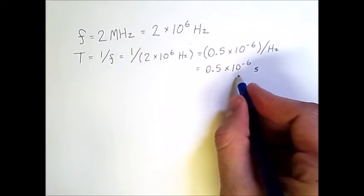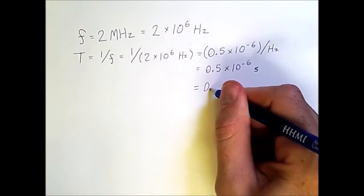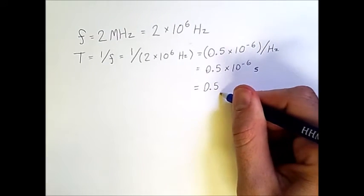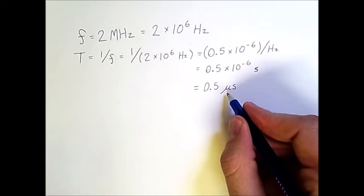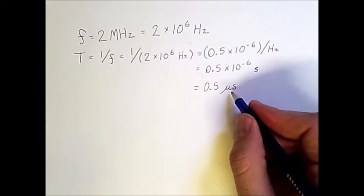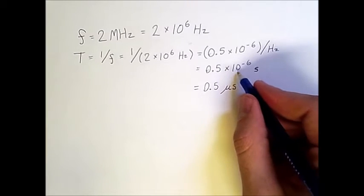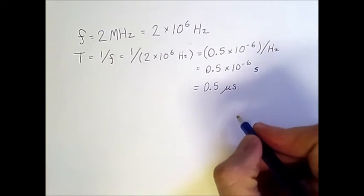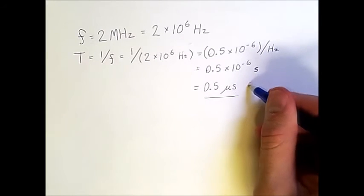And this 10 to the minus 6 means that this is equal to 0.5 microseconds. So this is another Greek letter. This is a mu, and when you have a mu s, that represents microseconds, and a microsecond is simply 10 to the negative 6 of one second. So this is our period,